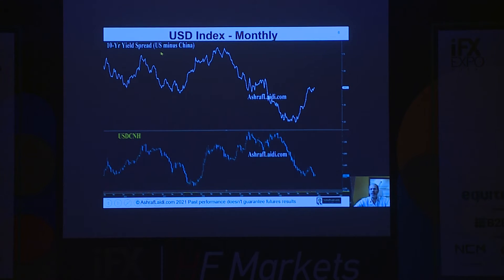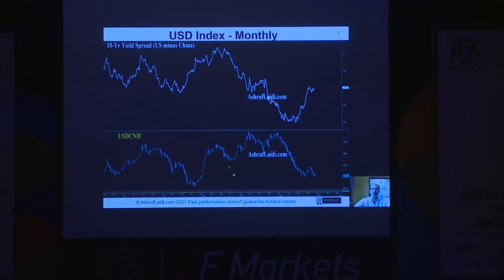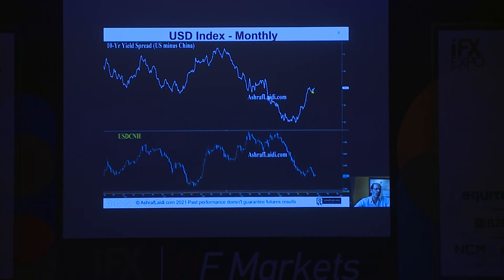Let's look at the 10-year yield spread — U.S. 10-year yield minus China. This graph shows minus 149, meaning U.S. minus China 10-year yields are improving to the benefit of the U.S., but they're still negative. And this is the U.S. dollar falling against the Chinese yuan, meaning buying less yuan.